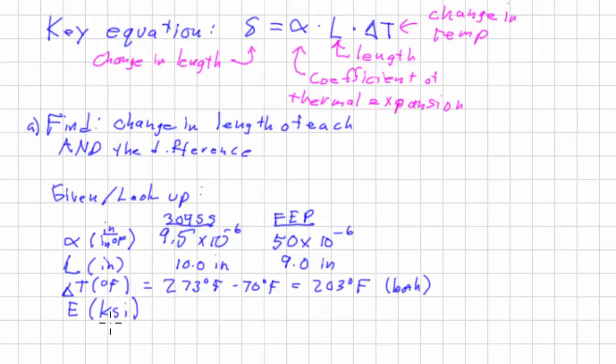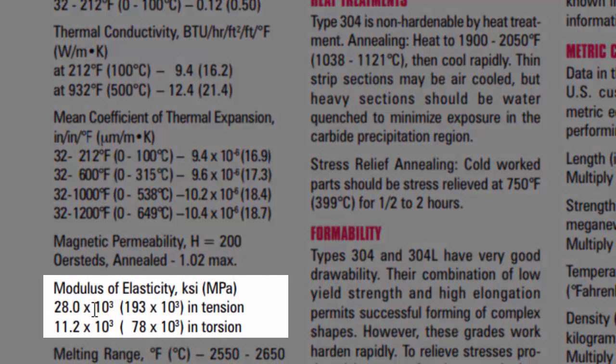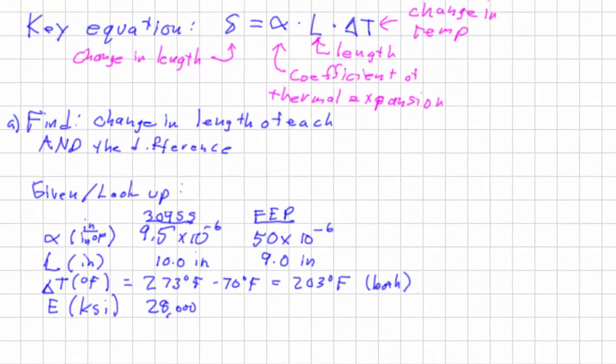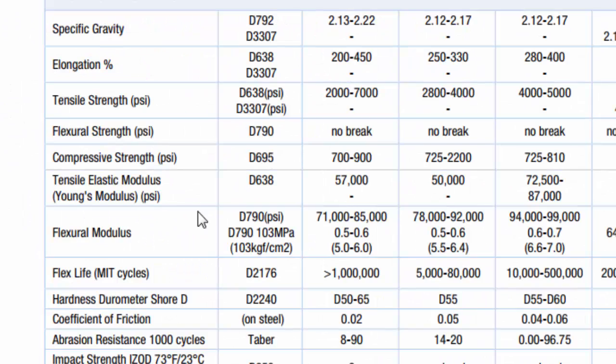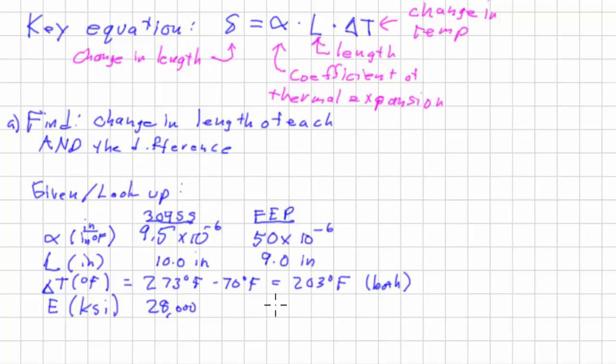And the modulus of elasticity, again we'll probably use this later, in KSI for the stainless steel is 28,000. As you can see right here, 28 times 10 to the third KSI. For the FEP, it has an elastic modulus of 50,000 PSI, so that's only 50 KSI. So you can see that these two materials are very different in their properties.